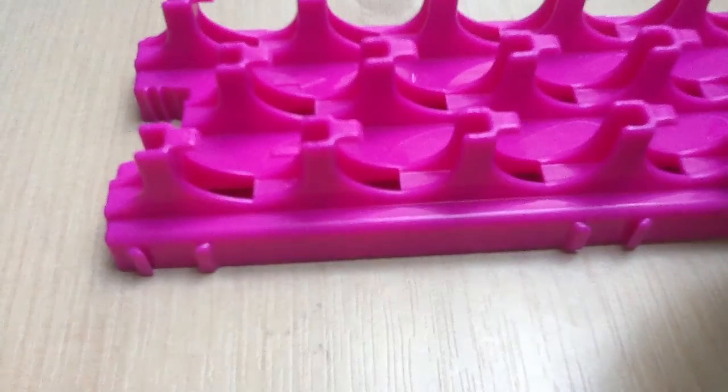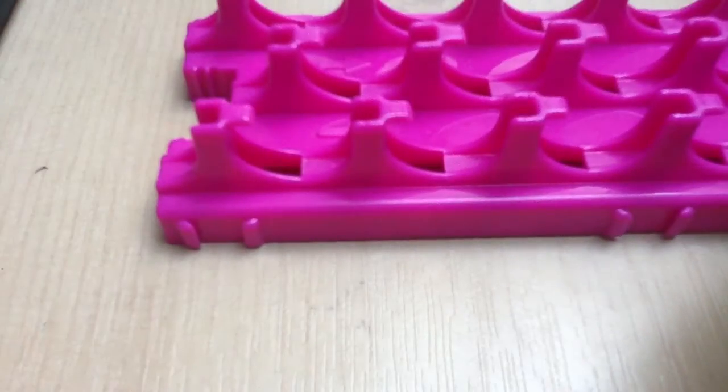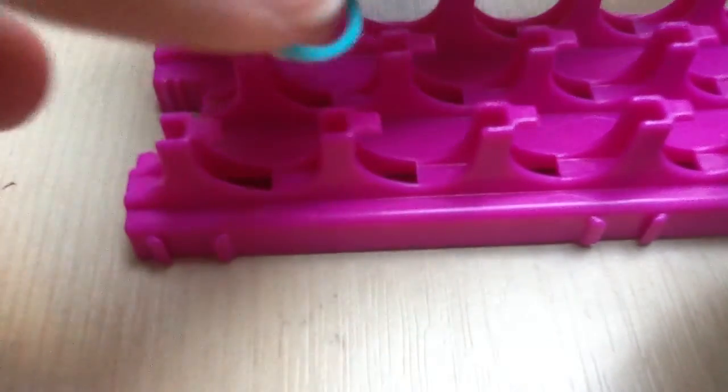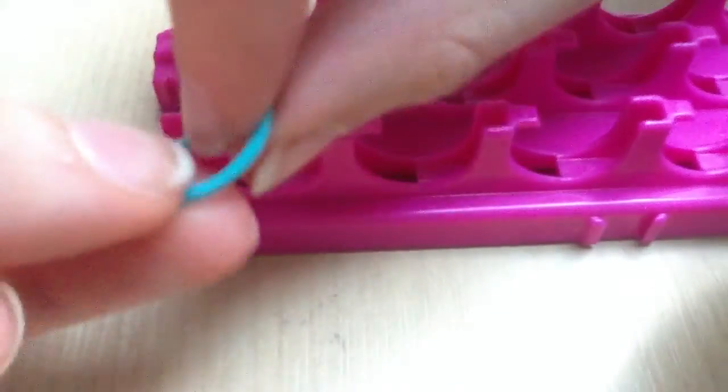Choose your pattern and color. Take your first rubber band and twist it so it makes a figure eight, like so, then place it on.